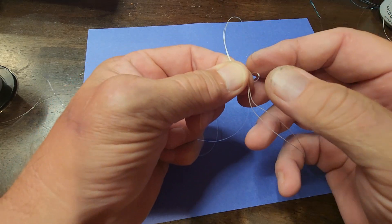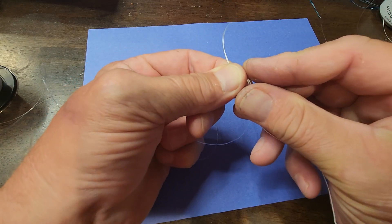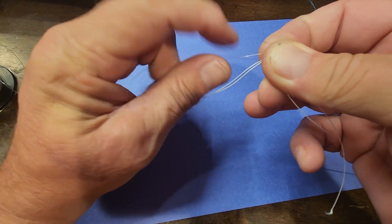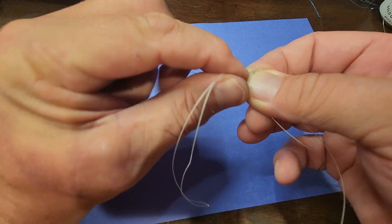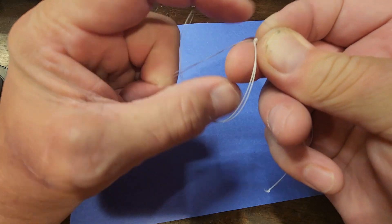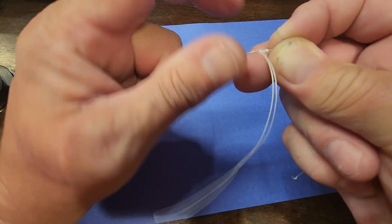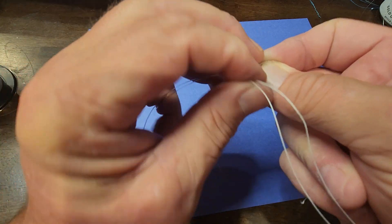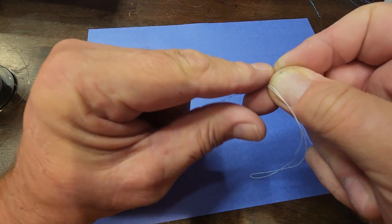What I'm gonna do is pinch this right here in the loop, like this, and I'm gonna wrap this six or seven times: one, two, three. Try to keep the line tight when you wrap it to prevent slack from being in the knot when it slips down.